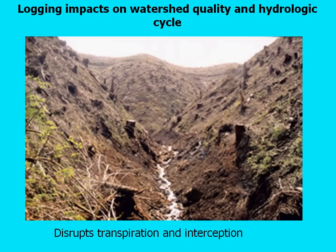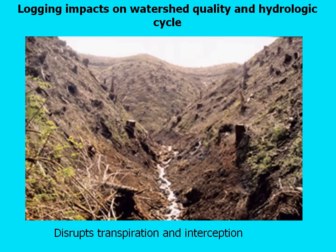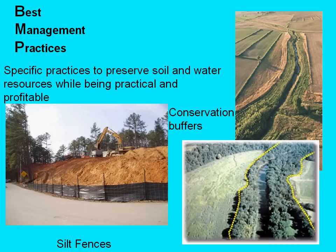Best management practices, or BMPs as they're commonly called, are ways to ameliorate or improve the situation caused by logging impacts that lead to erosion and increased sediment loads in streams. BMPs could include installing silt fences to keep sediment from running into the watershed, leaving buffers instead of harvesting all the way to a stream bank, or leaving a strip of forest to serve as a filter for sediments. Sometimes planting a particular crop or tree in an area is another BMP that preserves soil and water resources while remaining practical and profitable for the land use activity.